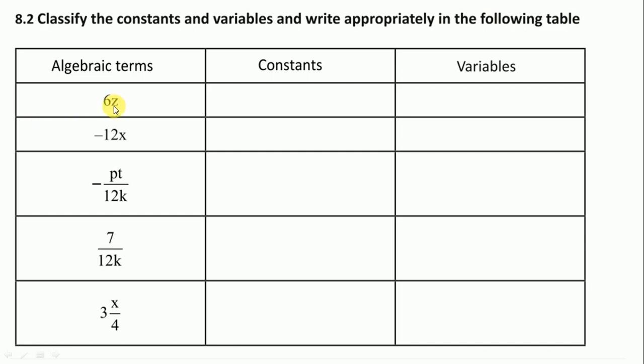Here 6z: 6 is the coefficient of z, so there is no constant here, so we write none, and the variable is z. Here also constant is not there, so we write none and variable is x. Here also there is no constant.